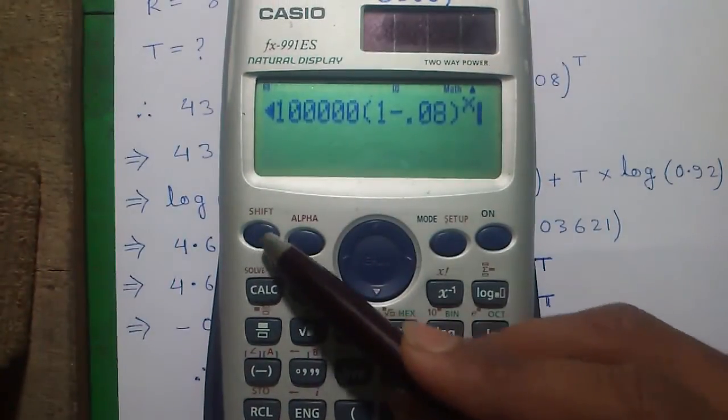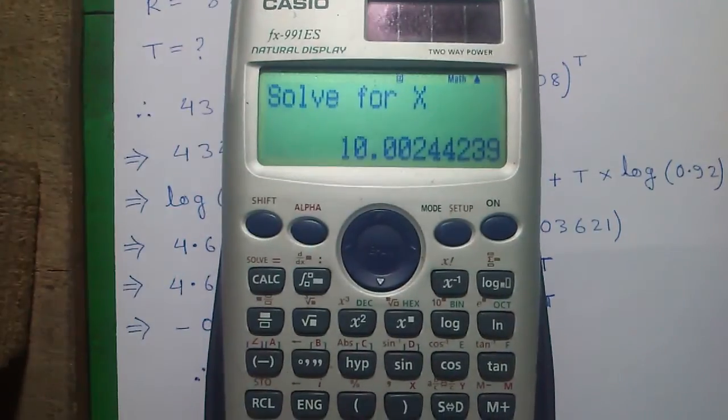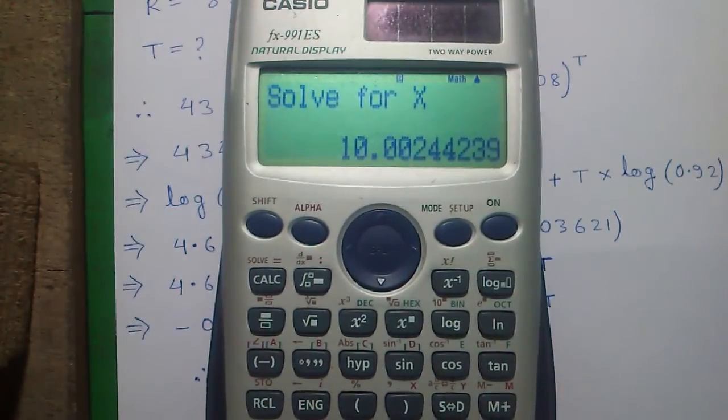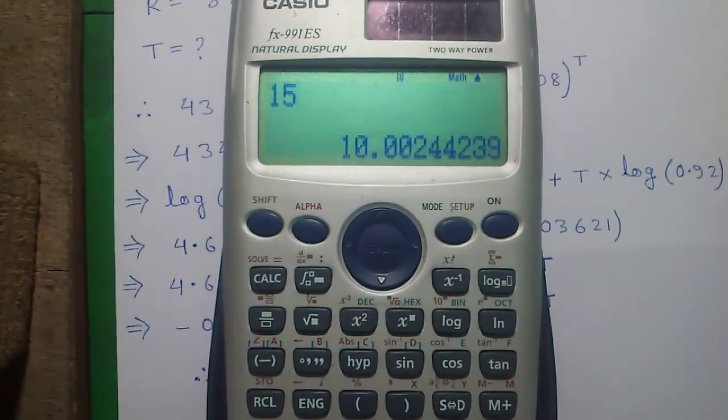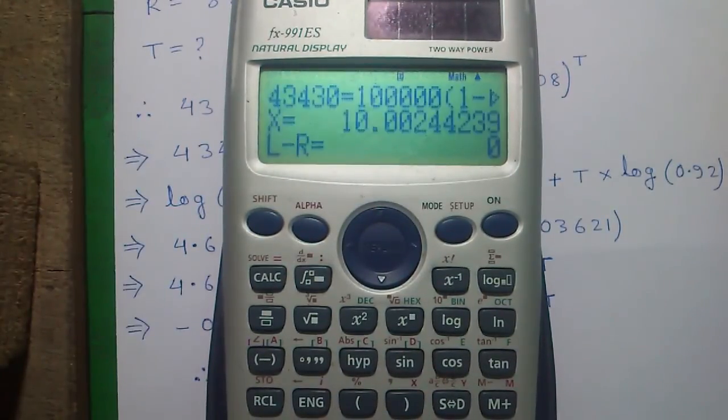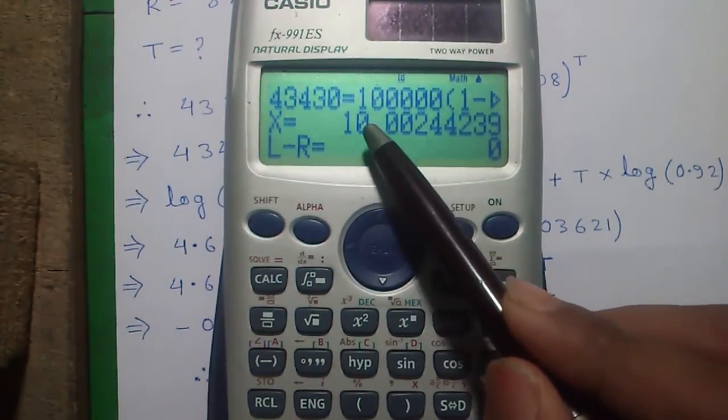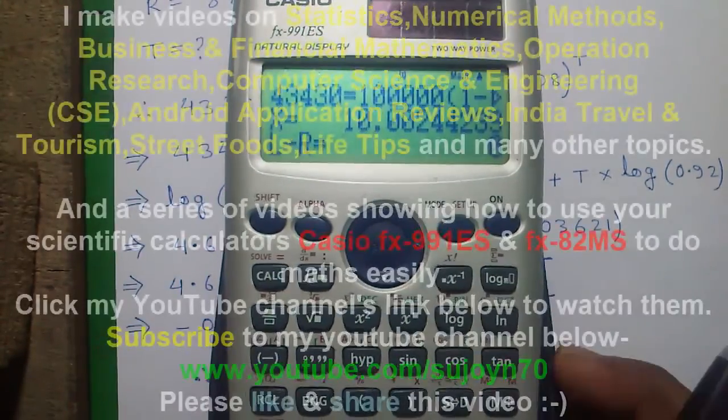And now press shift and calc and enter your closest guess for the value of X. Let's say our guess is 15 years and press equals to. It will calculate the value for X. So value of X equals to 10.00 years.